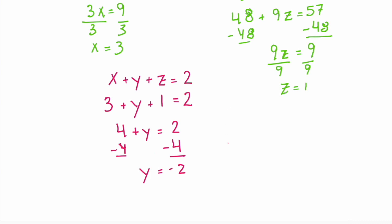Now we have a solution for x, y, and z. That would be the coordinate (3, -2, 1).